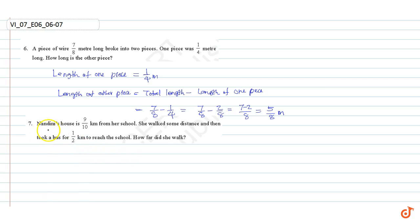Question number seven: Nandini's house is nine by ten kilometer from her school. She walked some distance and then took a bus for half kilometer to reach the school. How far did she walk?